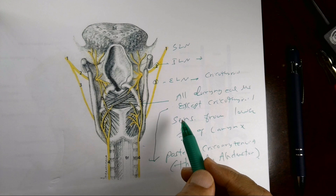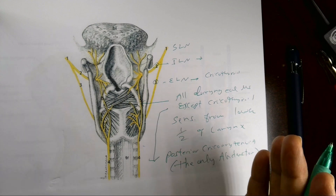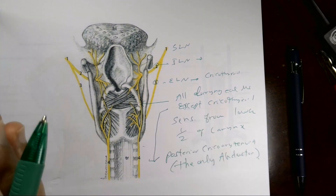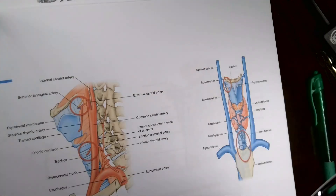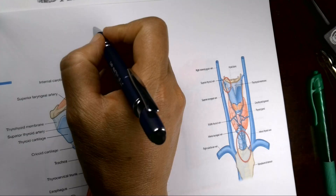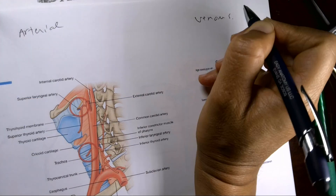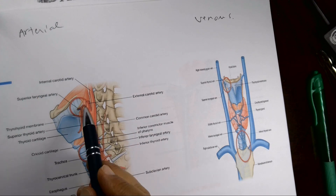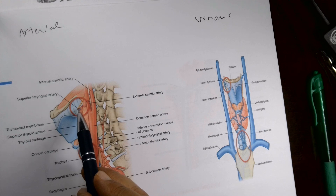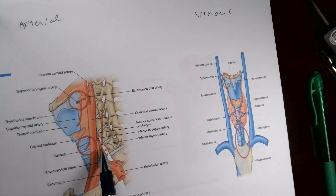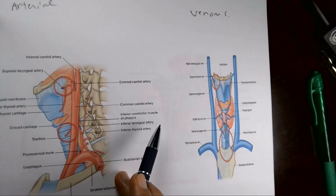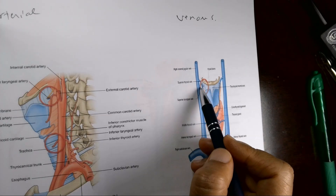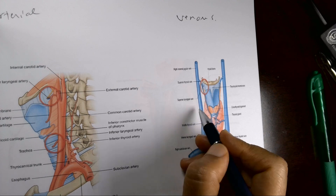The most important muscle supplied by the recurrent laryngeal nerve is the posterior cricoarytenoid — the only abductor. If the recurrent laryngeal nerve is damaged, the posterior cricoarytenoid is paralyzed, leading to immediate adduction of the vocal cord. If this happens on both sides, it is a disaster because it shuts down the airway.